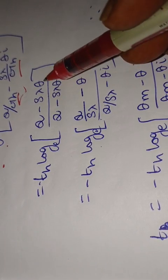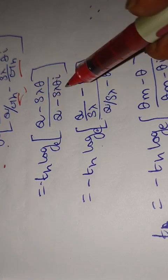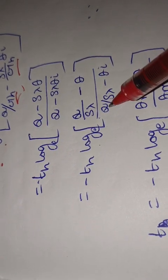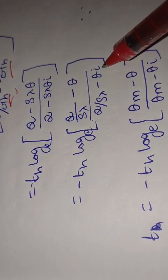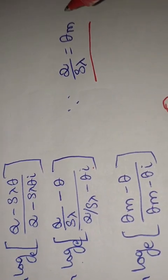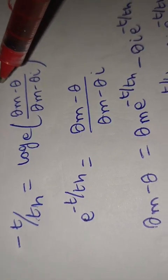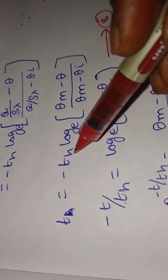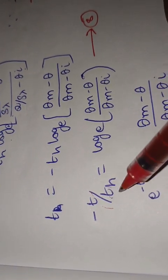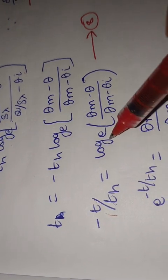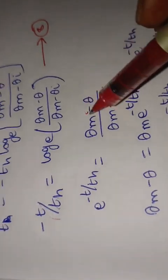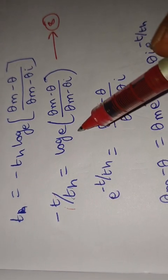To simplify further, divide both numerator and denominator by S·λ: giving (Q/(S·λ) − θ) / (Q/(S·λ) − theta_i). Since Q/(S·λ) = theta_m, we substitute: −t/T_H = ln[(theta_m − θ) / (theta_m − theta_i)]. That is equation eight simplified.